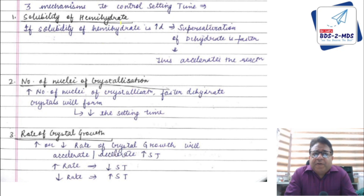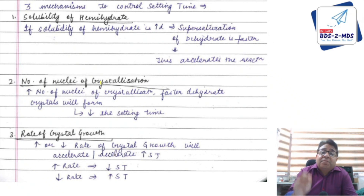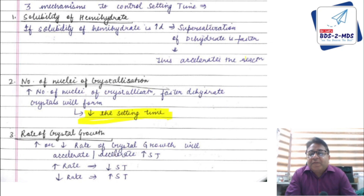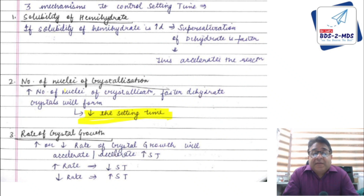The three mechanisms controlling setting time: (1) Solubility of hemihydrate — if solubility increases, supersaturation of dihydrate is faster, accelerating the reaction. (2) Nuclei of crystallization — increase in nuclei means faster crystal formation and decreased setting time. (3) Rate of crystal growth. Questions often ask which factor will increase or decrease setting time.